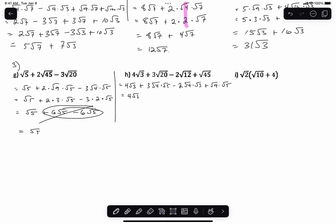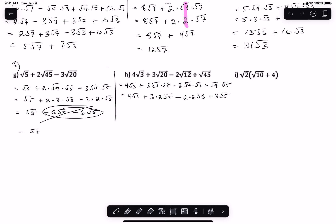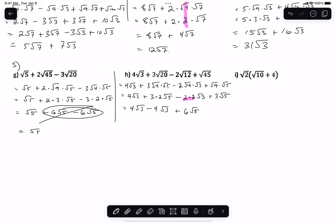So we get 4 root 3 plus 3 root 5, plus 4 root 5, minus 2 times the square root of 5, plus 3 root 5. Simplifying: minus 2 times the square root of 5, minus 2 times the square root of 5, plus 6 root 5, plus 3 times the square root of 5.